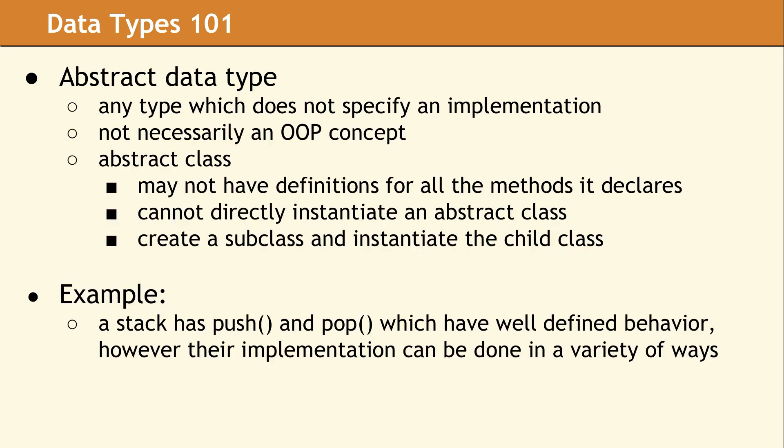Another broad category is the abstract data types, and this consists of any type which does not have an implementation. Oftentimes, this is taught as an object-oriented programming design technique, but it doesn't necessarily involve objects. However, the most common form of an abstract data type in C++ is an abstract class, which has methods that are declared but not defined. This means you cannot directly instantiate an abstract class, so you must instead instantiate a child class.